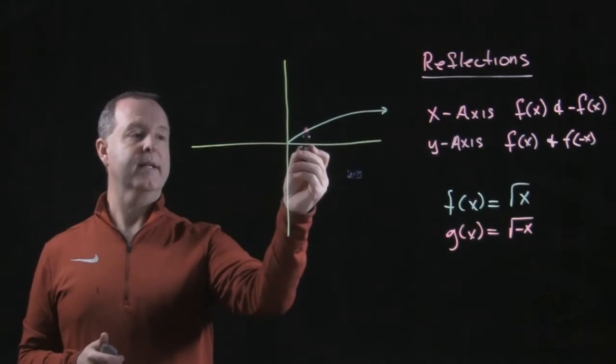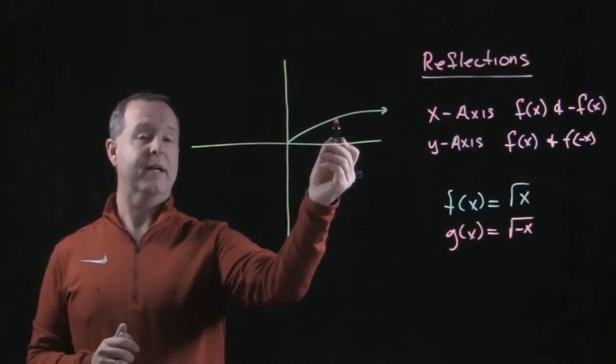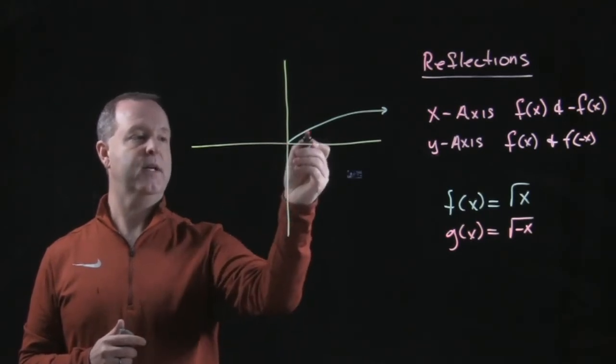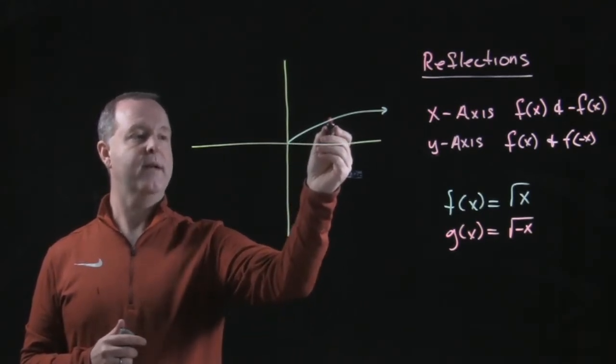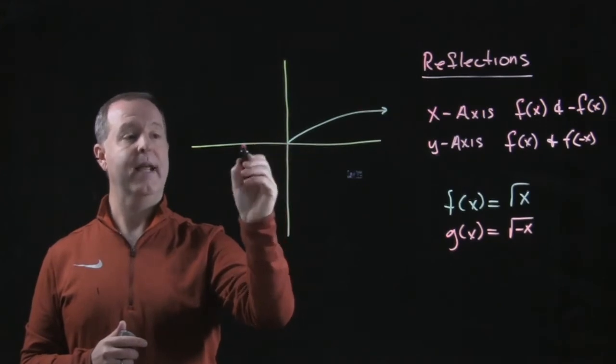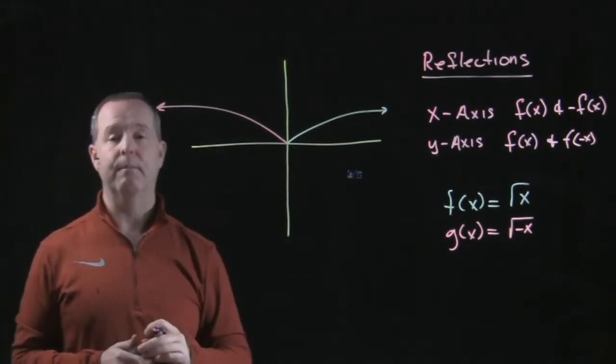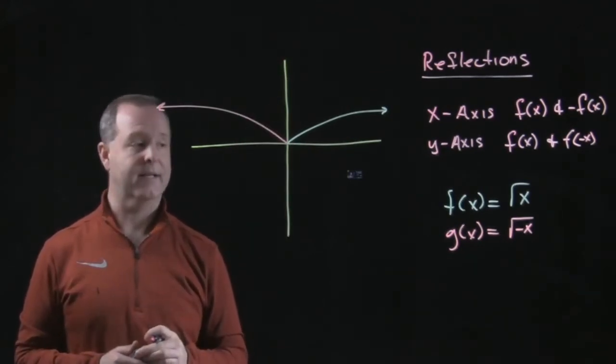So every point that I have on my f of x function is reflected about the other side. So I know I have the point zero, zero. There's a point one and one. So I'm going to have the point negative one and one. And every other point will be reflected as well about the y-axis.